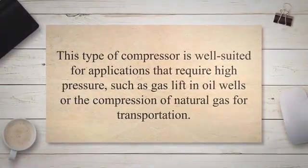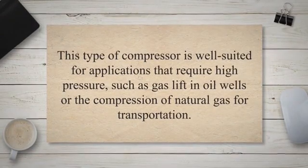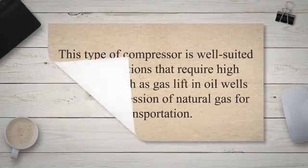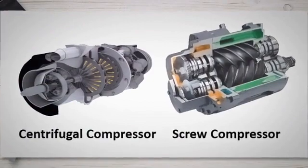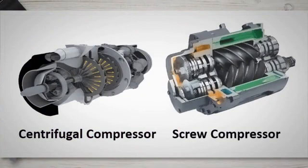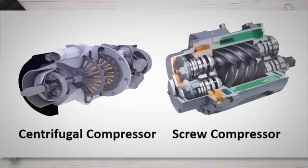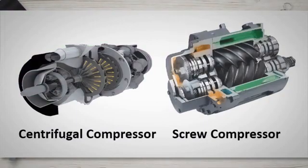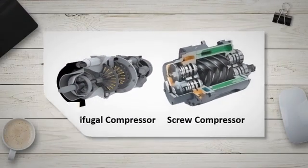Reciprocating compressors are used for applications such as gas lift in oil wells or the compression of natural gas for transportation. Rotary compressors, including screw compressors and vane compressors, operate through the continuous rotary motion of vanes or screws. They are commonly used in midstream and downstream processes for applications like gas gathering, gas processing, and refining.